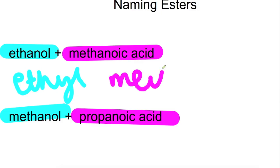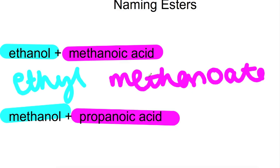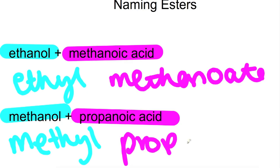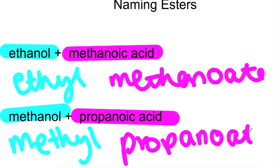So we get ethyl methanoate. In the second example the parent alcohol is methanol, which becomes methyl, and the parent carboxylic acid is propanoic acid, which becomes propanoate — giving methyl propanoate. The names come in two parts from the parent molecules that made them.